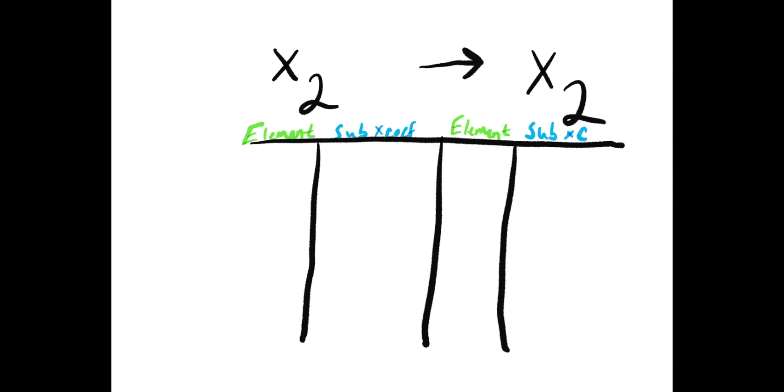I would then create a second column that accounts for the subscripts of each element. If there is no subscript after an element, we can safely assume that there is an understood one there. The third part of the chart is where we're going to put our coefficients. The final column on both sides is the total number of that specific atom. We find this number by multiplying our subscripts and coefficients together.